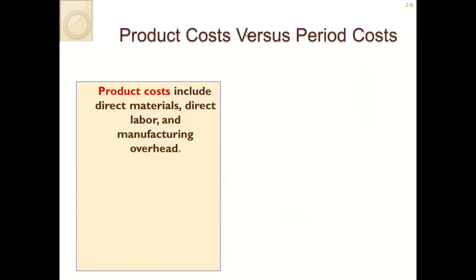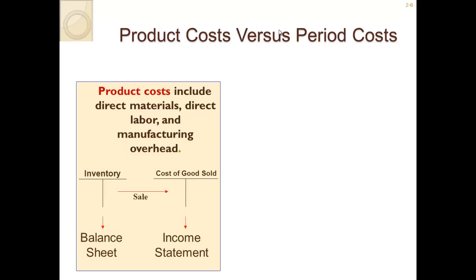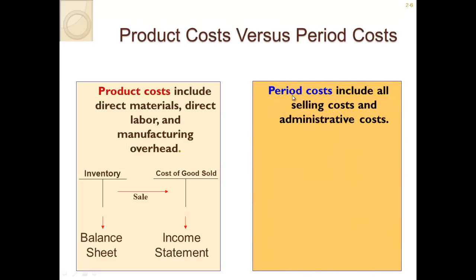When doing cost accounting, it's very important to decide whether a cost is a product cost or a period cost. A product cost includes direct material, direct labor, and manufacturing overhead. These product costs move from an inventory item — raw materials — into a cost of goods sold item on the income statement. So cost of goods sold is made up of direct materials, direct labor, and manufacturing overhead.